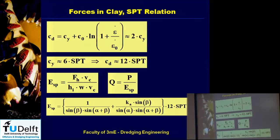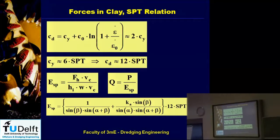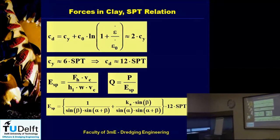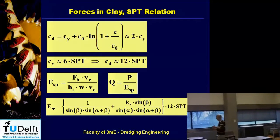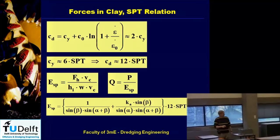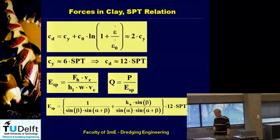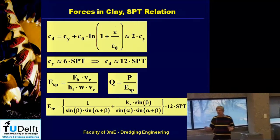If you know everything, of course you can use this equation to determine the exact factor, but because it's a logarithm — for example cutting velocities of around six meters per second for a normal cutter head — the difference between six and seven meters per second is very small due to the logarithmic form. So in the range where we are normally operating, say four to ten meters per second, this factor could go from 1.8 to 2.1, roughly two.